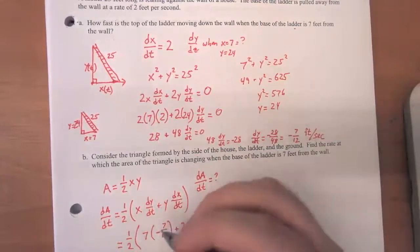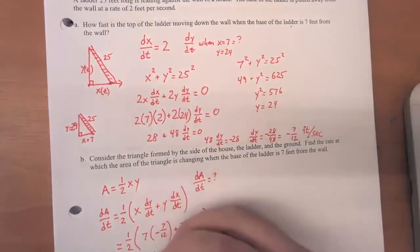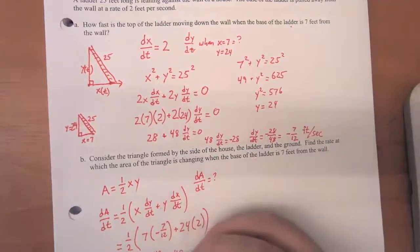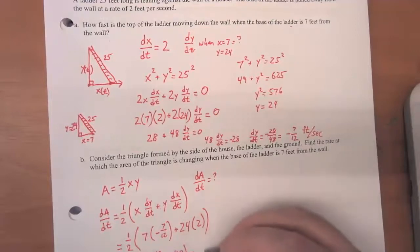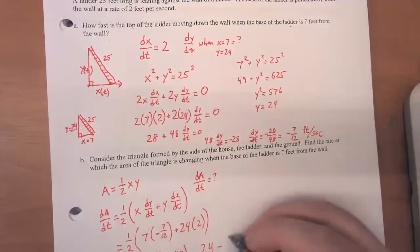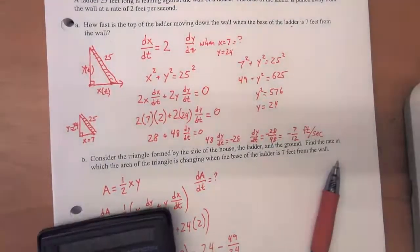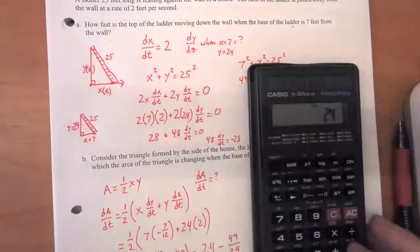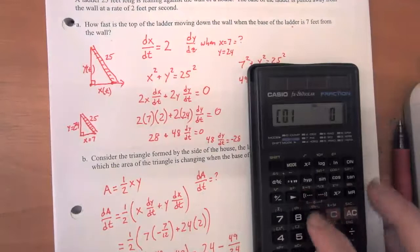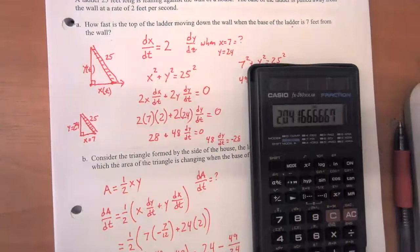And so that's equal to one half and 7 times negative 7/12 is negative 49/12 plus 48. And that's equal to 48 times one half is 24 minus 49 over 24. And if I do this on my calculator, I've got 24 minus 49 divided by 24.